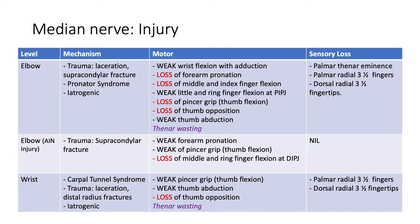Median nerve injuries at the level of the elbow are caused by trauma such as lacerations or supracondylar fractures, pronator syndrome, and iatrogenic causes. One would expect weakness in wrist flexion with wrist abduction, loss of forearm pronation, loss of middle and index finger flexion, weakness in little and ring finger flexion, loss of pincer grip (thumb flexion), loss of thumb apposition, and weakness in thumb abduction, along with thenar wasting. Sensory loss occurs over the palmar thenar eminence, the palmar lateral three and a half fingers, and the dorsal lateral three and a half fingertips.